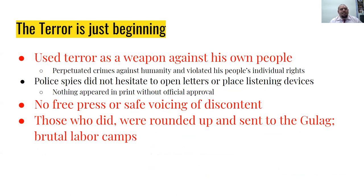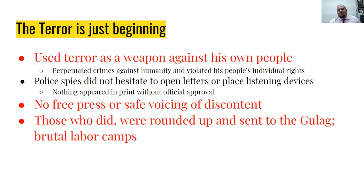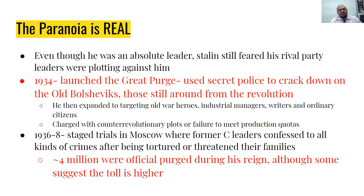Stalin used terror as a weapon against his own people — that's what totalitarianism is all about. He perpetuated crimes against humanity and violated his people's individual rights. Police spies did not hesitate to open letters or place listening devices in homes or businesses. Nothing appeared in print without full official government approval — there was no free press and no safe voicing of discontent. Those who did were rounded up and sent to the gulag — brutal labor camps.